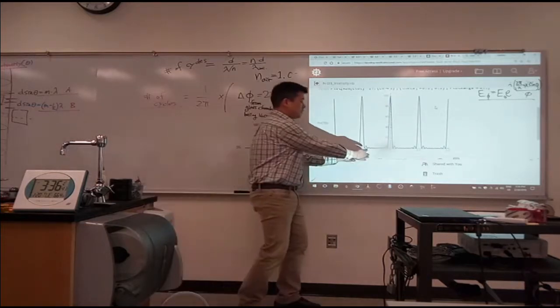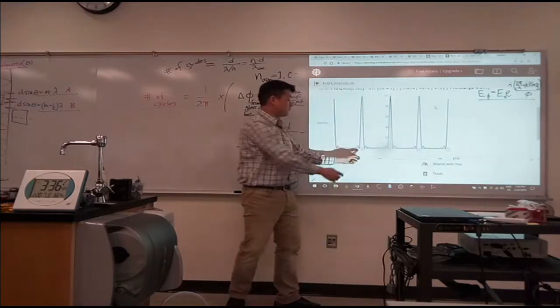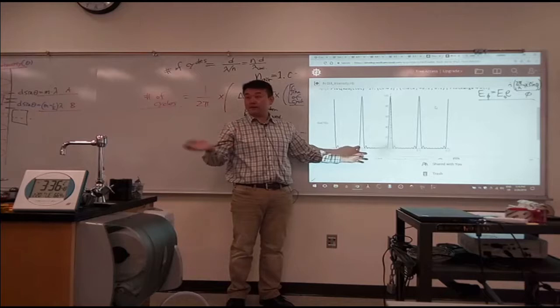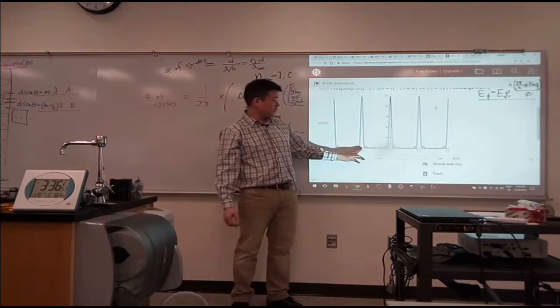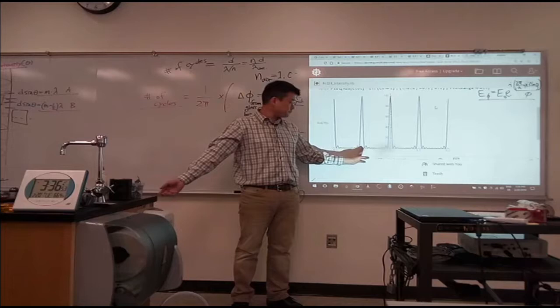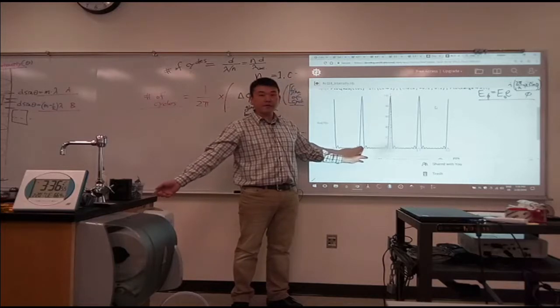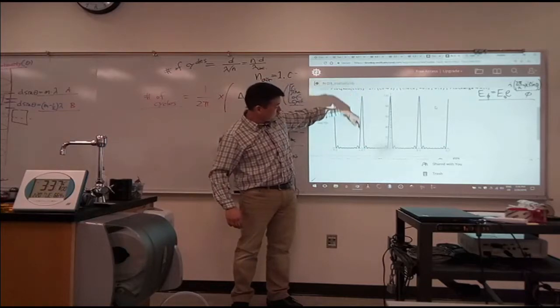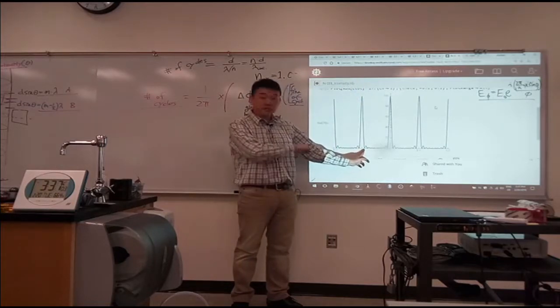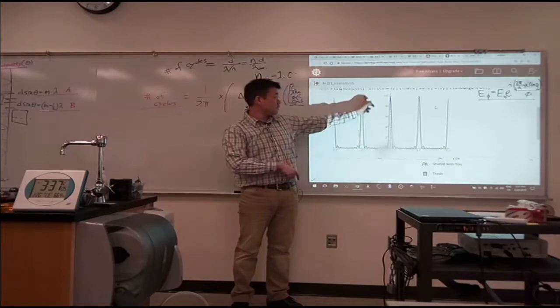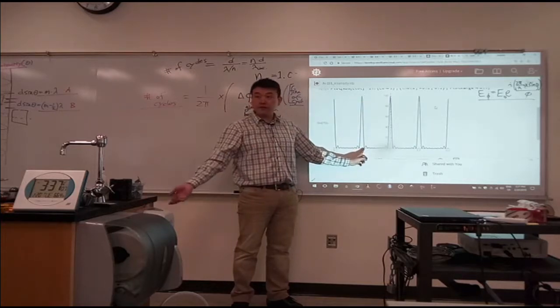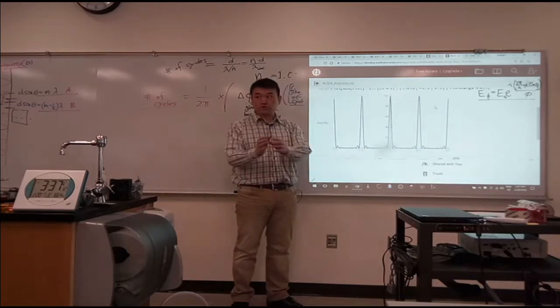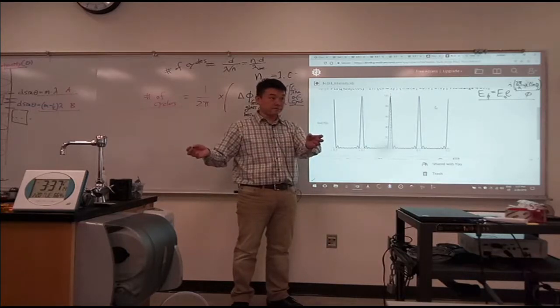It's going to be limited by how wide this maximum is. So you can use something similar to Rayleigh criterion. If for the second light the wavelength is different enough so that this peak moves over to this position where the first minimum for the other one is, then you could say that's different enough that this diffraction grating is enough to resolve those two different wavelengths.